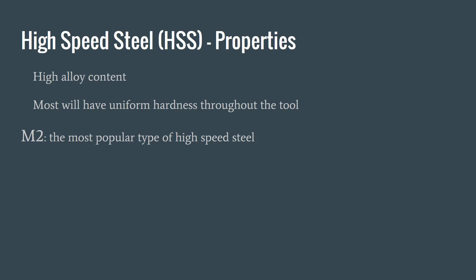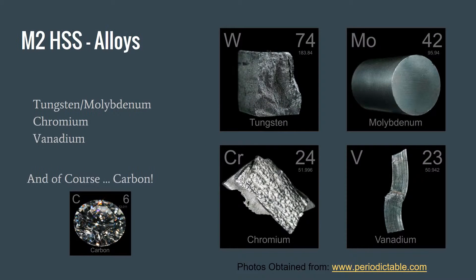High speed steel has a very high alloy content compared to mild steel. M2 is the most popular type given its balance of strength and durability, so that's what we'll focus on. There's a wide variety of alloys within M2 high speed steel, most of which are represented on this slide.